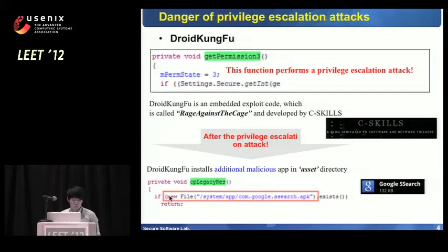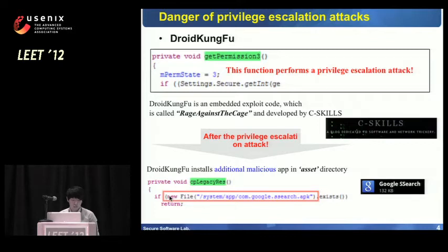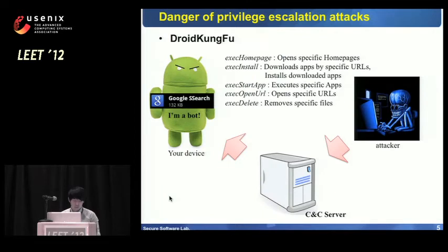Droid Kung Fu contains an Android privilege escalation attack called 'rage against the cage,' made by C-Skills, and executes the code in the getPermission function. The code is encrypted by AES before execution and decrypted when needed. If root privilege is hijacked through privilege escalation, Droid Kung Fu installs an additional malicious app called Google Assets Search by simply copying an APK file into the system app directory. This installation is especially dangerous because it is done without the user's knowledge.